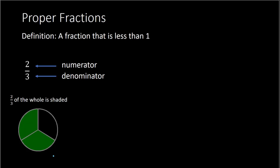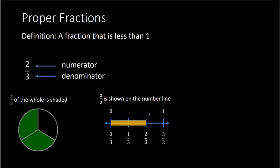On a number line, we have 0 and 1. Zero is the same thing as 0 thirds, then 1 third, 2 thirds, and 3 thirds, which is the same thing as 1. We have shaded in 2 out of the 3 tick marks, so we have 2 thirds here on this number line — it is 2 thirds of the way from 0 to 1.